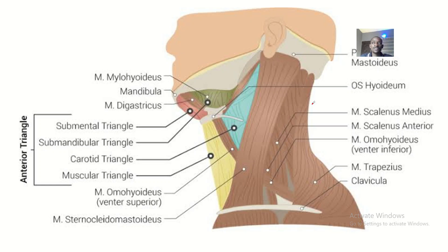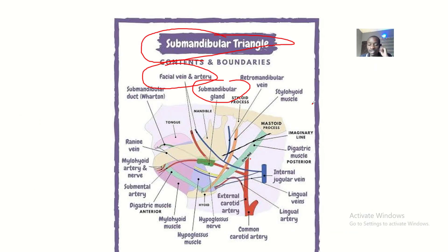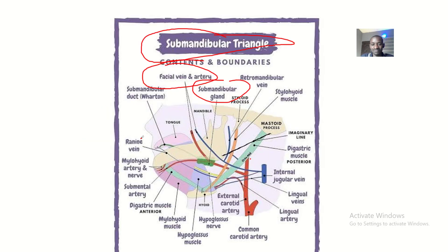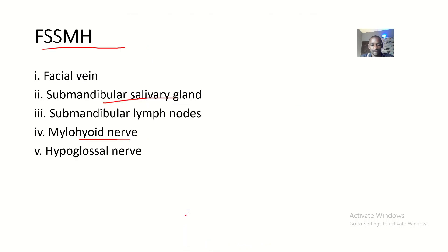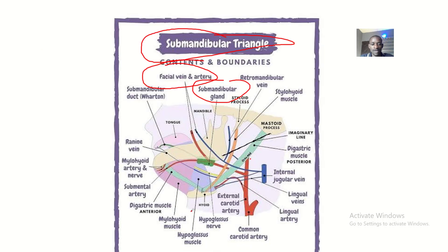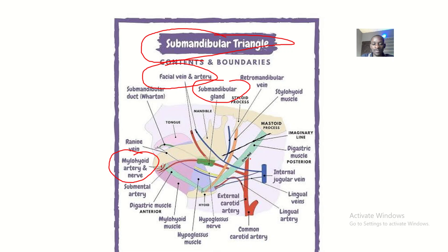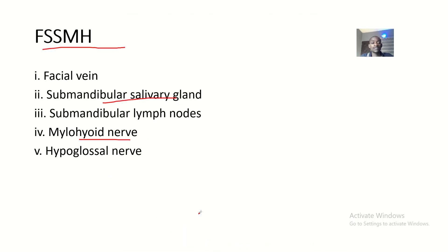This other image describes the contents better. We have the mylohyoid artery and nerve. And lastly, we have the hypoglossal nerve.